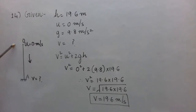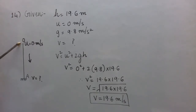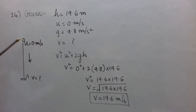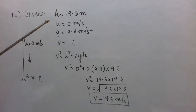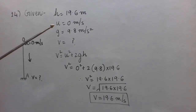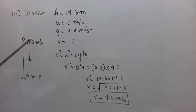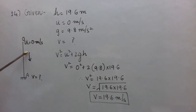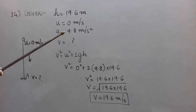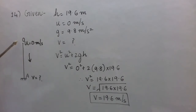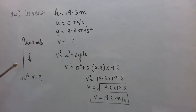Let O be the top of the tower from where the stone has been released. Since it is released or dropped, u is 0 meter per second. It is a case of freely falling stone, so small g, acceleration due to gravity, is taken as positive 9.8 meter per second square, as it is falling downwards.